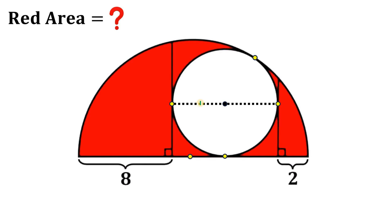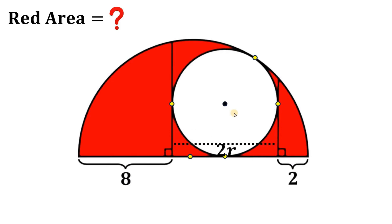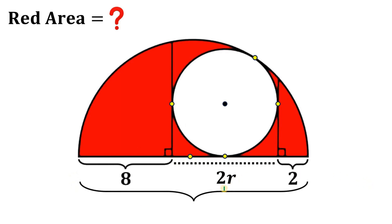To find the radius of this circle, let r be the radius of the circle. This is r, this is also r, and the diameter is just 2r. From here, we bring down this diameter, and from here we can get the diameter of the semicircle, which is just 2r plus 8 plus 2, or simply 2r plus 10. This is the diameter of the semicircle.